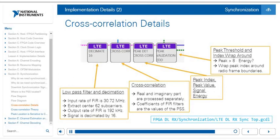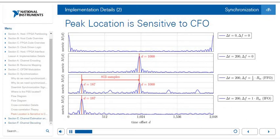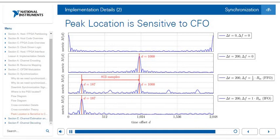The peak location is sensitive to carrier frequency offset. The true time offset is D = 1000 samples. There will be peak ambiguity in the case of FFO, and the peak is shifted by 813 samples in the case of IFO. For more details, see the LC Application Framework paper, which cites the research behind these specific blocks.